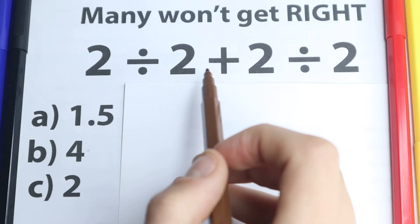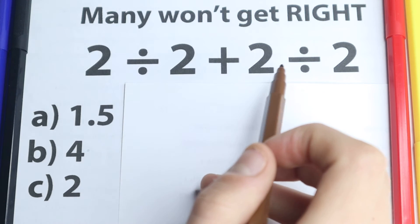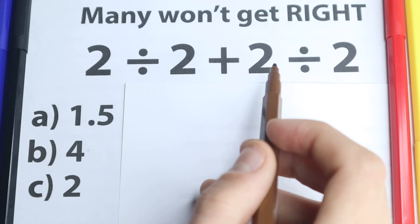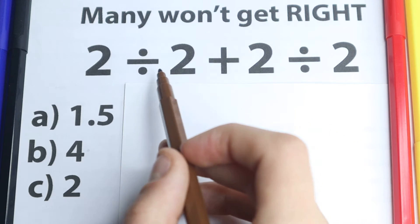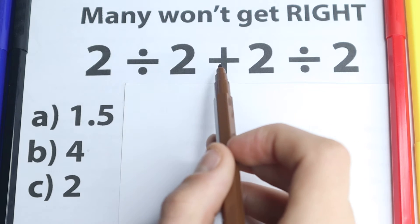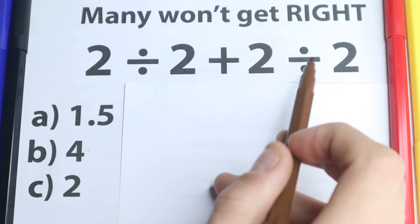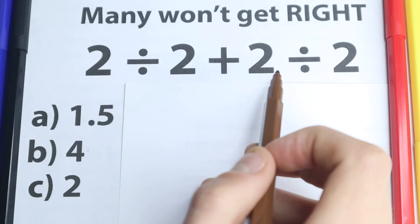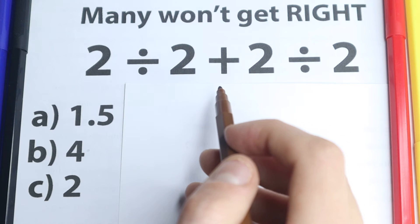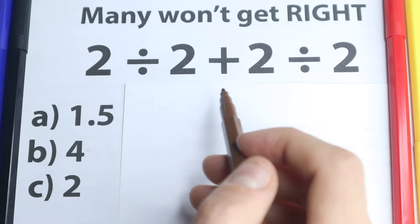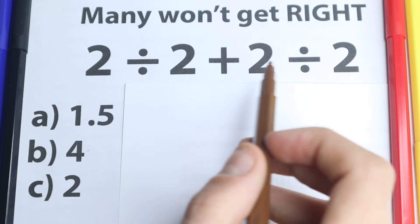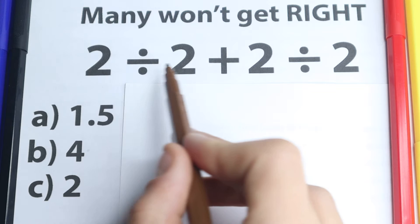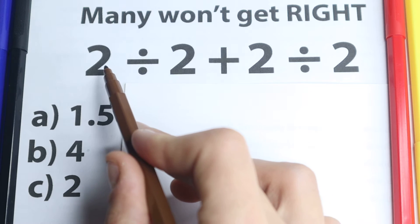We have 2 divided by 2 plus 2 divided by 2. On the first side this is a very simple expression — we have division, addition, and once more we have division right here. So everyone learns this stuff in the third grade or fourth grade, everyone knows about this operation, everyone knows about this number.